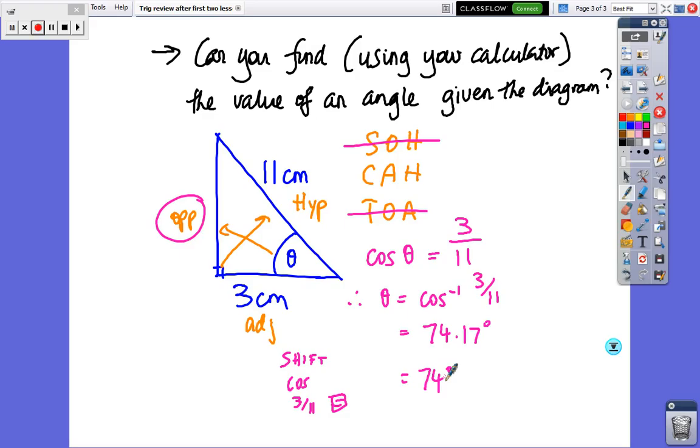So, first of all, you have to identify the ratio that you're going to use, and then it's just straight on the calculator, you have to press shift. Previously, when we're just finding the ratios, you don't press shift, you just go sine 27, but when you're trying to find the angle, you have to use the shift button, and then you use the ratio button, then put the number in, then press equals.